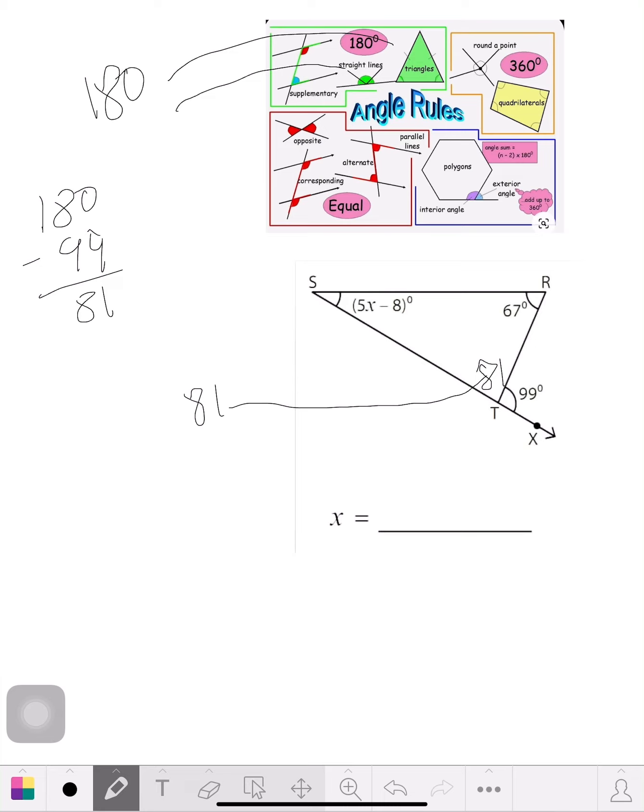So if we got 81, 67, let me make this out to a line thing instead. So we got 5x, that's 1 angle, minus 8, plus 67, plus the 81 we just solved. And we know they're all going to equal 180.